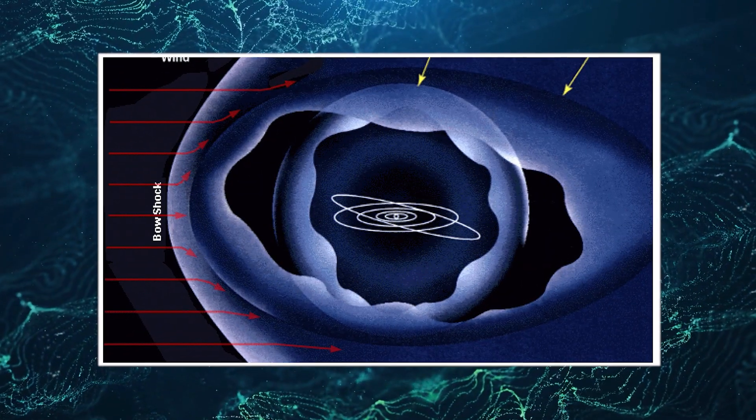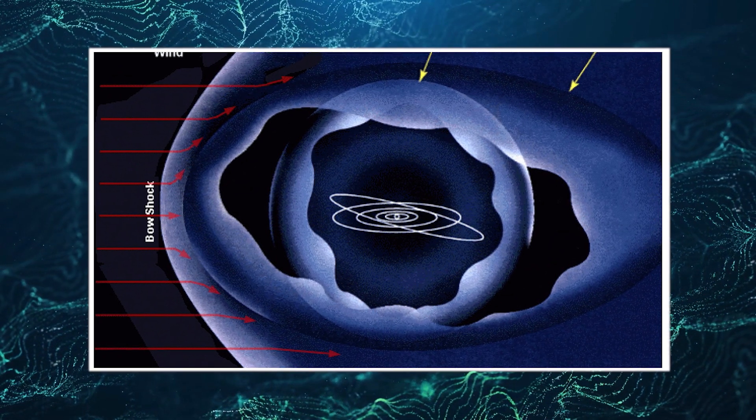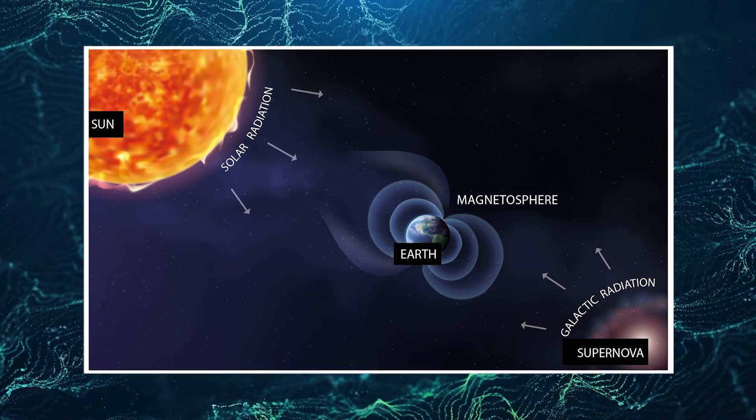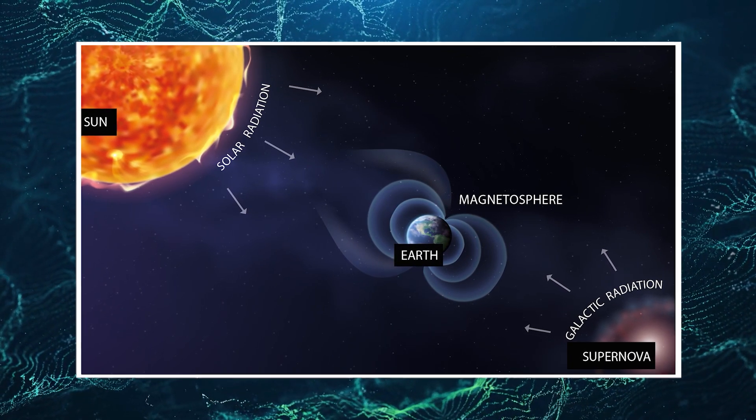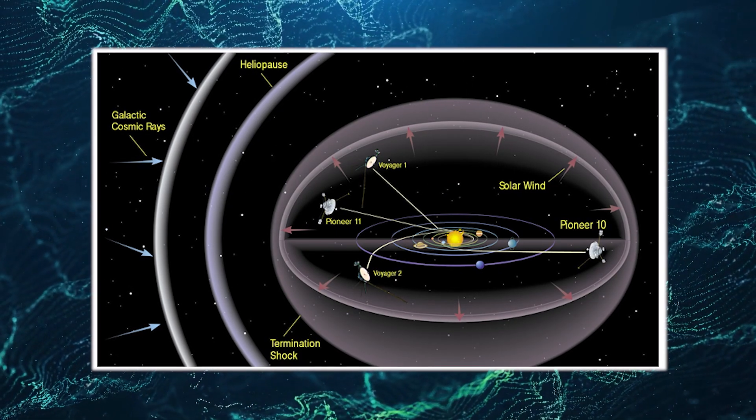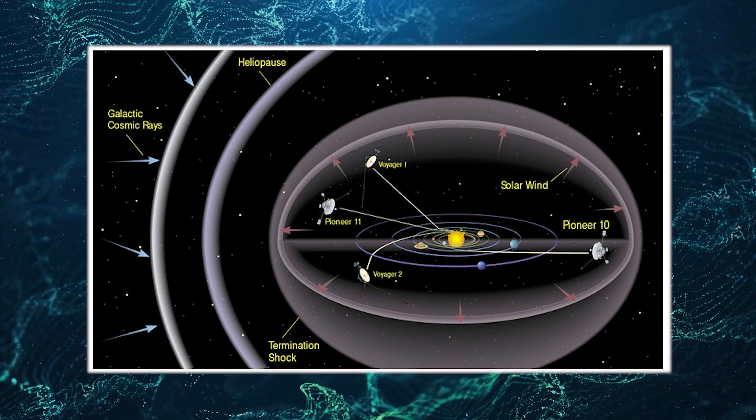Some speculate that the Voyagers may still be within the heliosphere, while others point to the significant increase in galactic cosmic rays and plasma density detected by the probes as evidence of their entry into interstellar space.